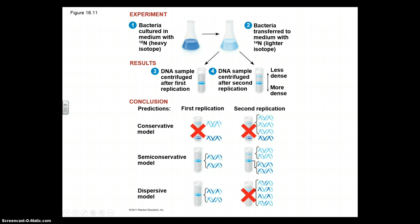Here is a picture of this experimentation. During the first replication, the conservative model was eliminated. During the second replication, the dispersive model was eliminated, making the semi-conservative model the only possibility for how DNA is replicated.